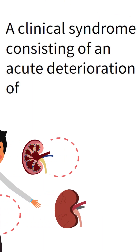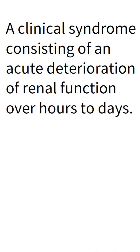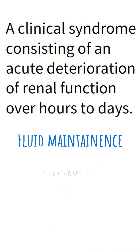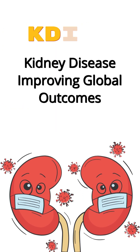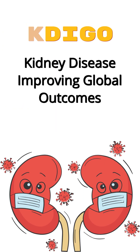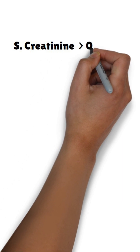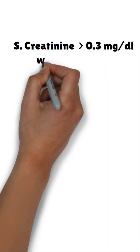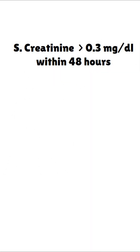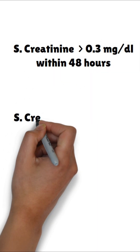Acute kidney injury is a clinical syndrome consisting of acute deterioration of renal function over hours to days, leading to a failure in fluid maintenance, electrolyte, and acid-base homeostasis. According to the KDIGO guidelines, AKI is defined as an increase in serum creatinine equal to or greater than 0.3 mg per deciliter within 48 hours.